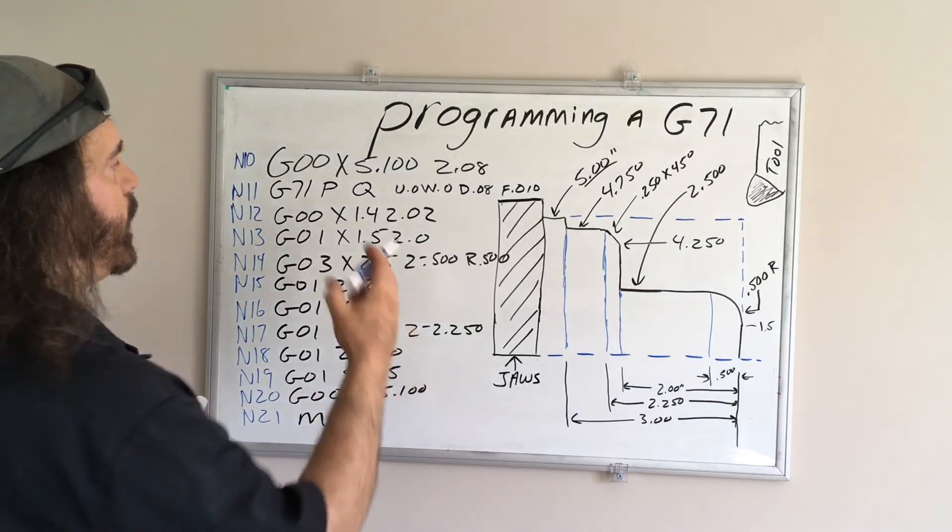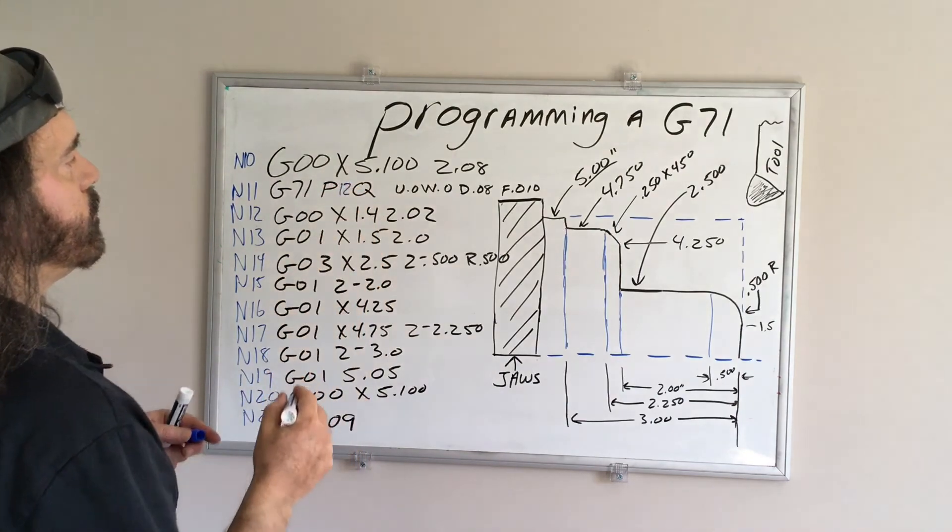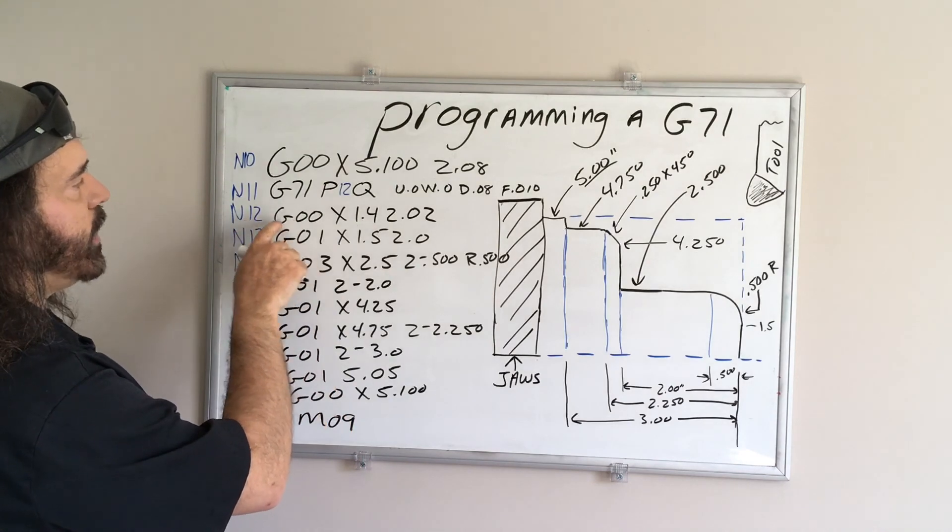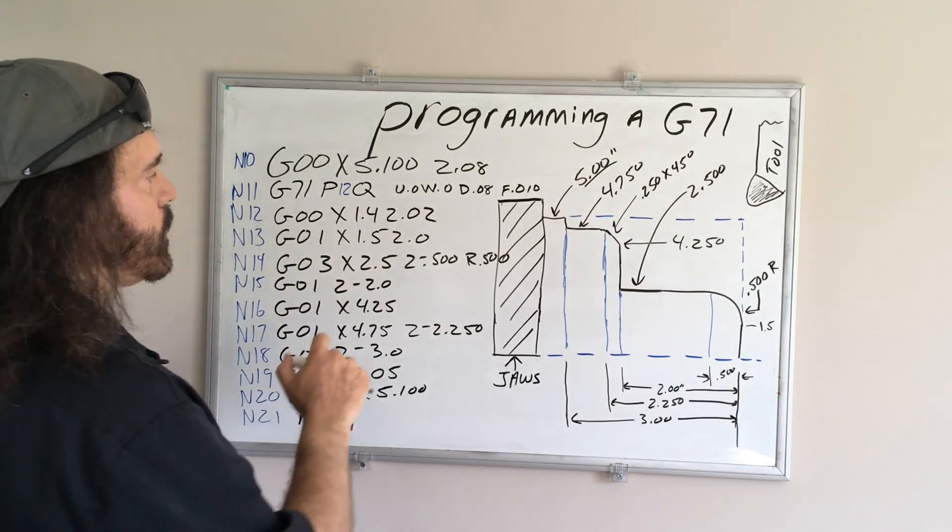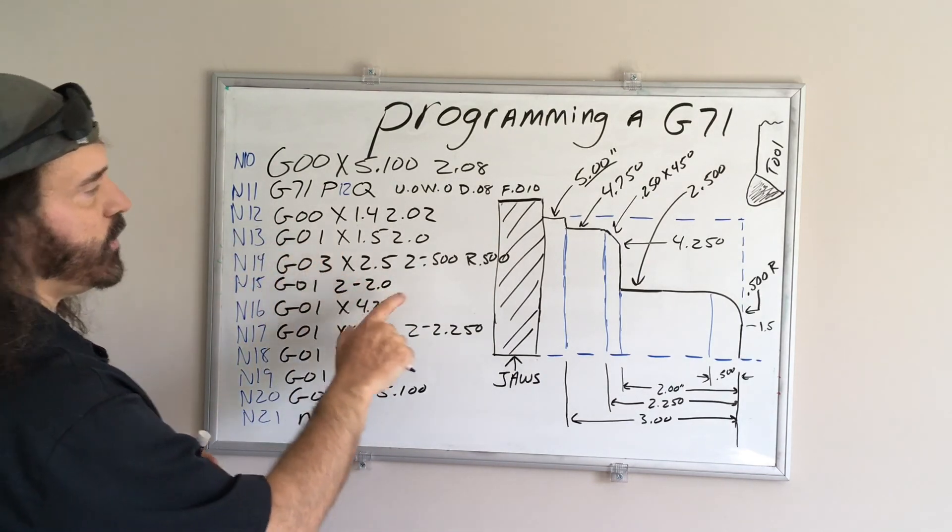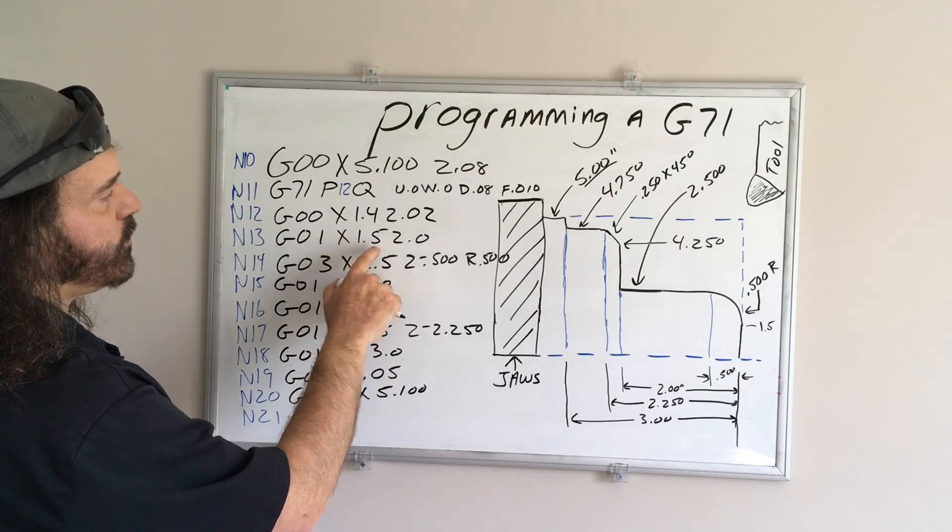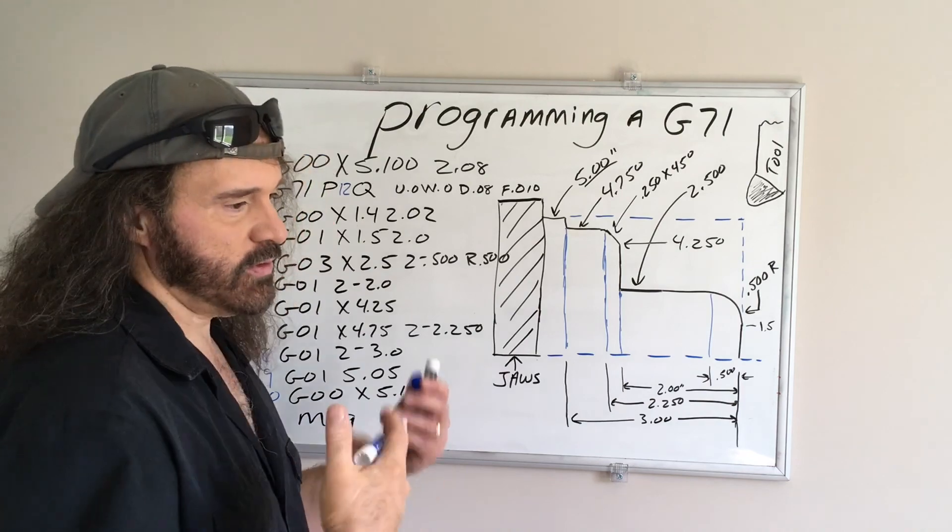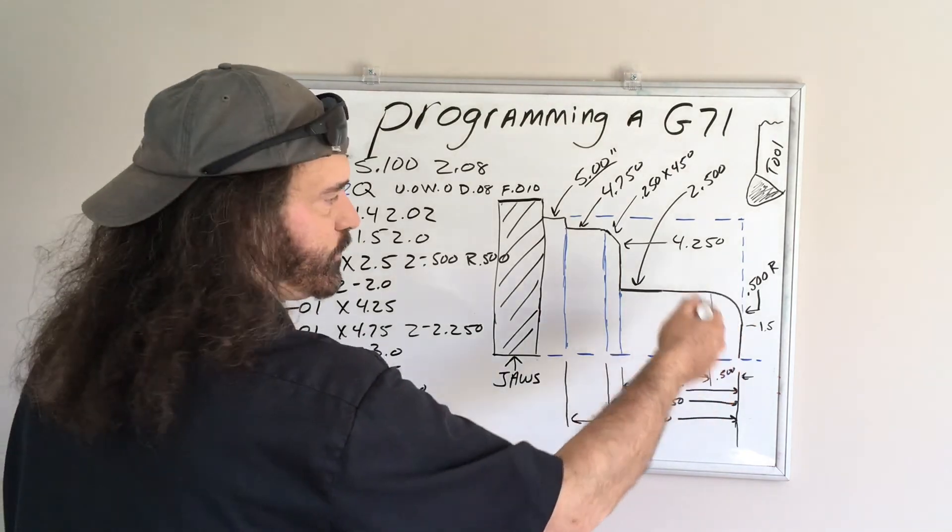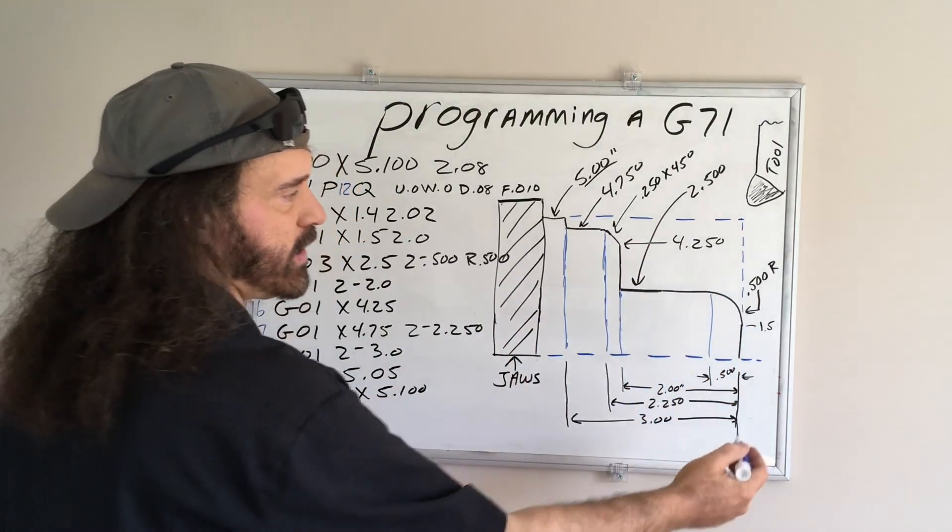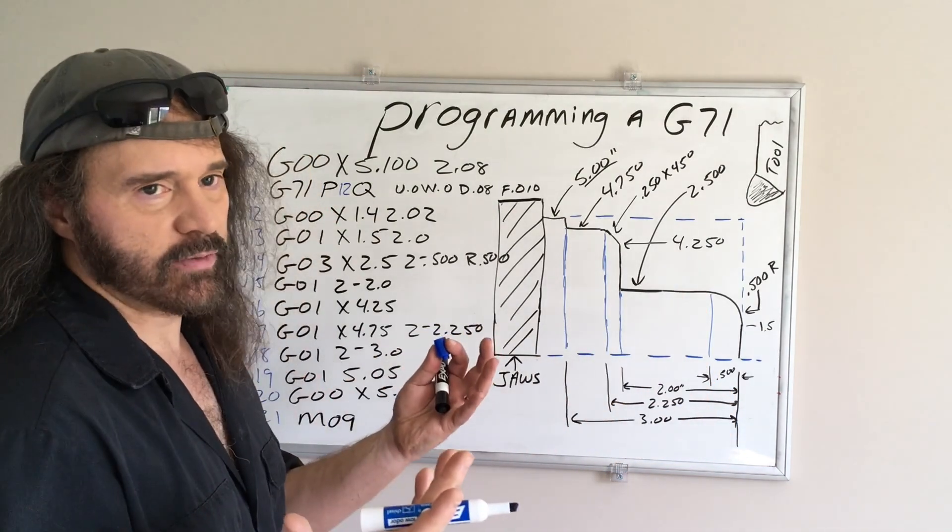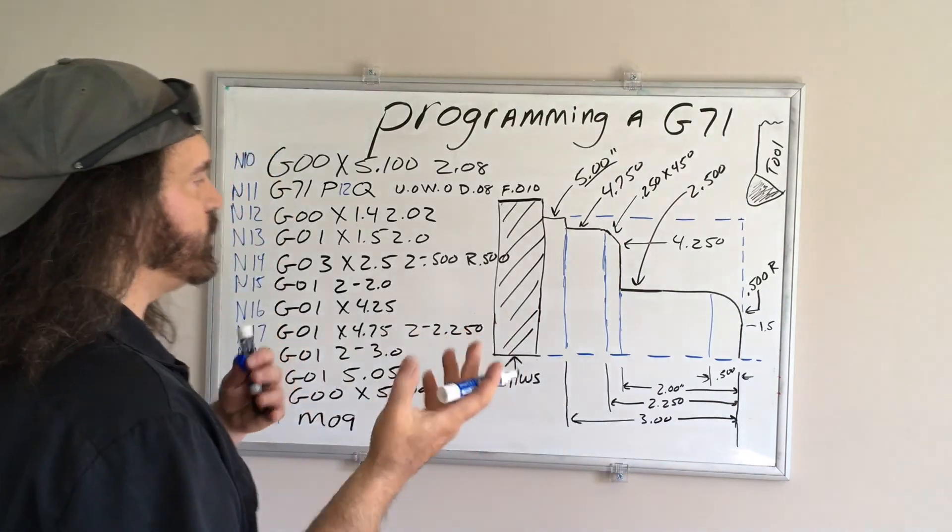So, P12, hopefully that shows up on camera. So that's where I want it to start. From there, it's going to do a feed move up to x1.5 to z0. Now this could vary, I'm just doing this for demonstration purposes, you can do whatever you want, you can actually have it feed into zero first and then go up, I'm just kind of showing you what I usually did.